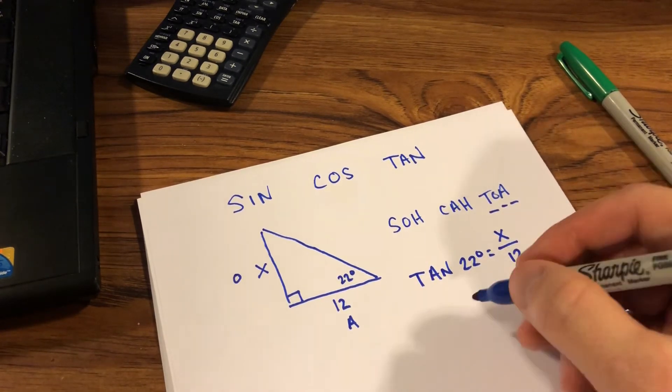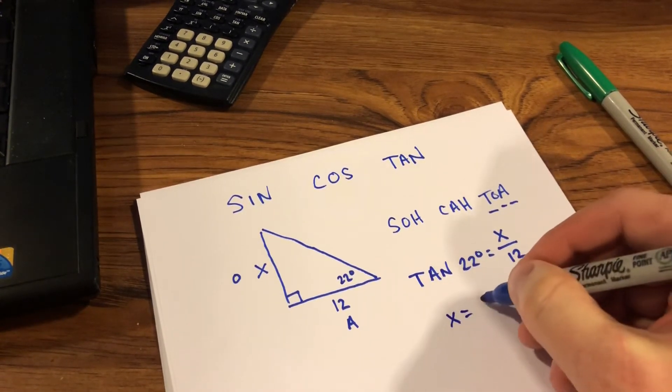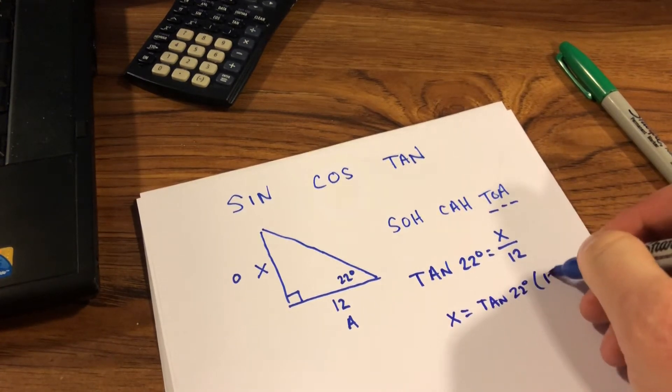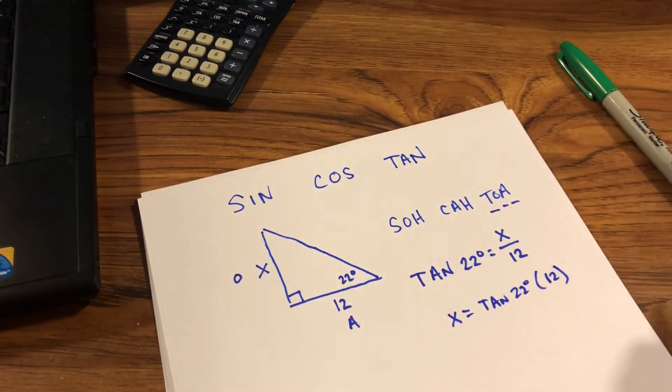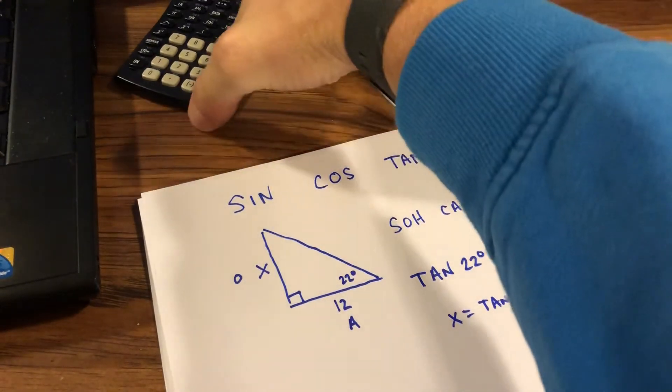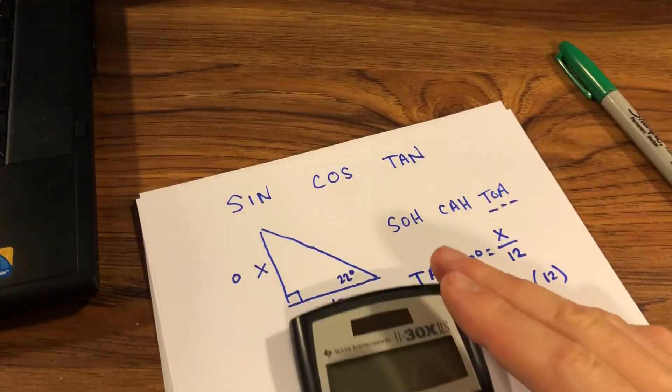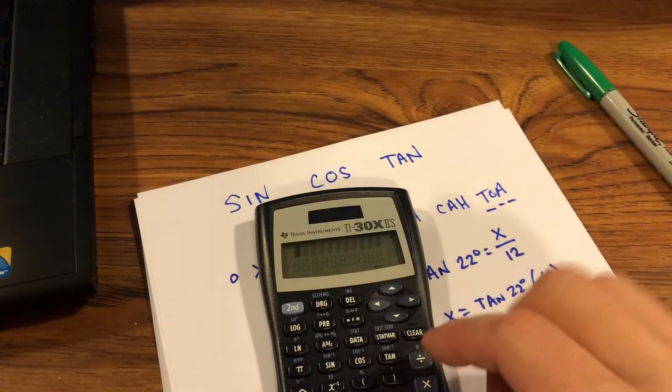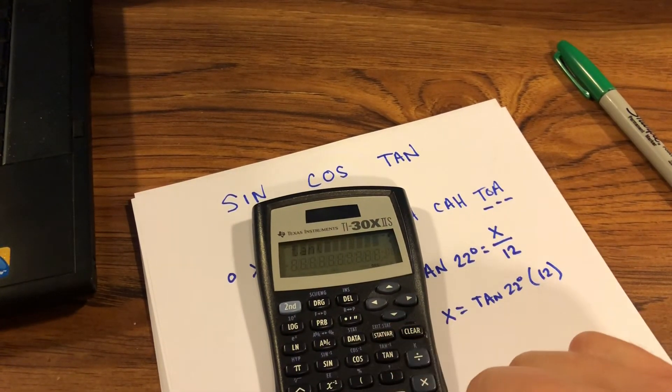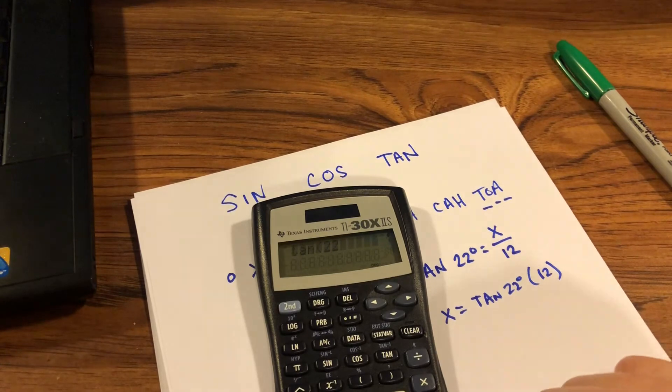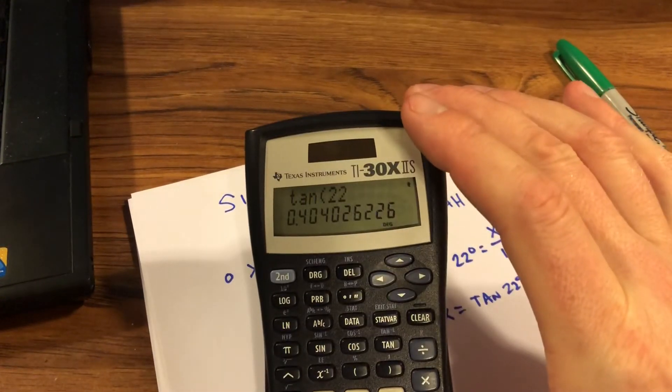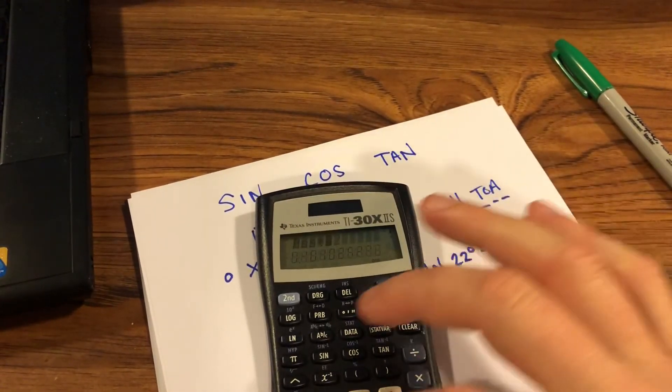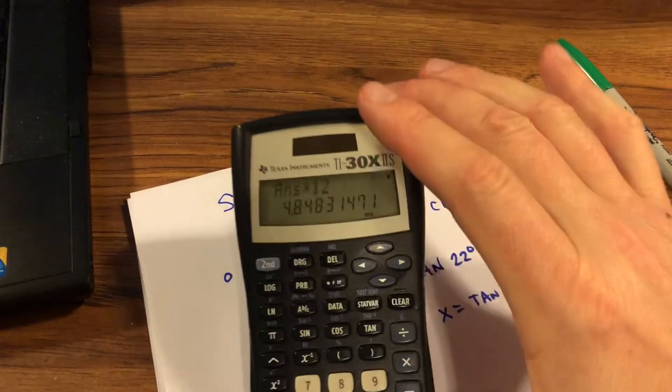So x would be tangent of 22 times 12, and from here it becomes a calculator problem. If I take my calculator and type in the tangent of 22 and hit enter, that gives me 0.4040. Then I'm going to multiply that times 12.